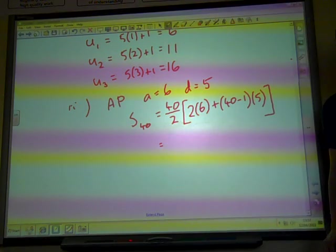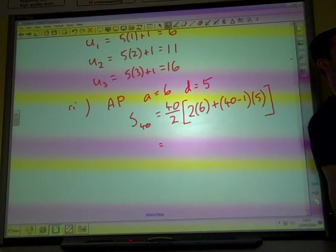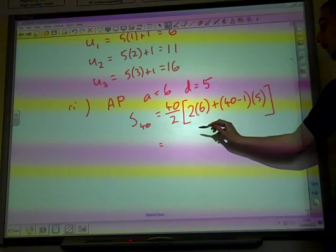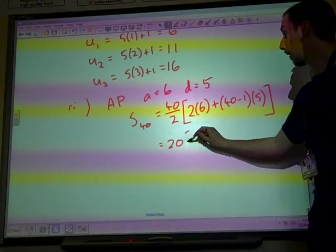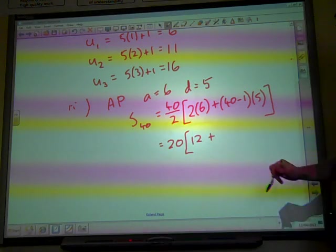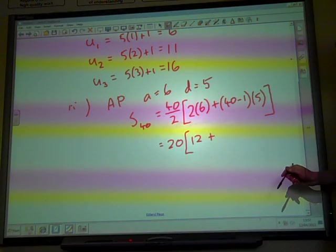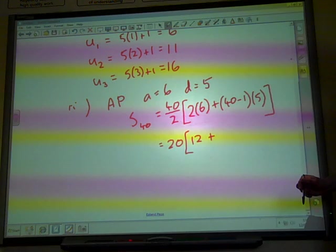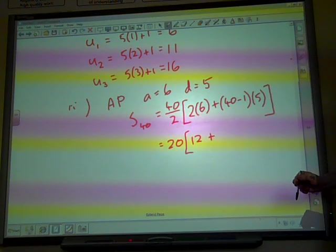So we're working out—we're on core 2, so we can use a calculator. We've got 20 times, what is this, 12, plus 39 fives, 195.